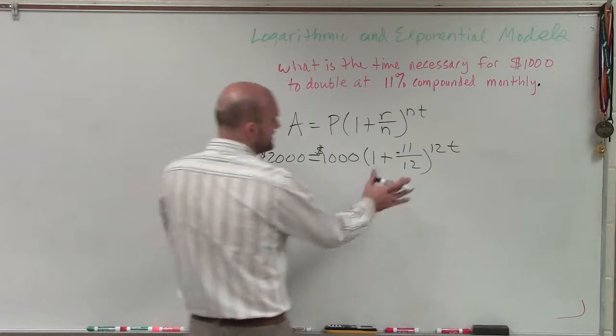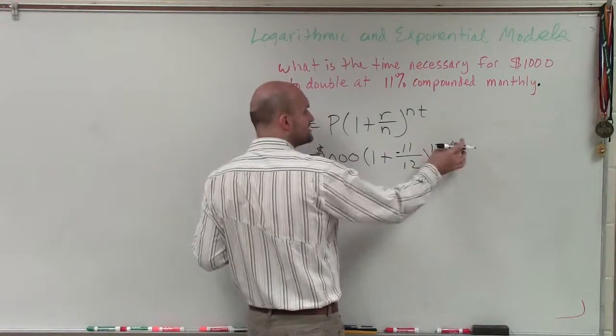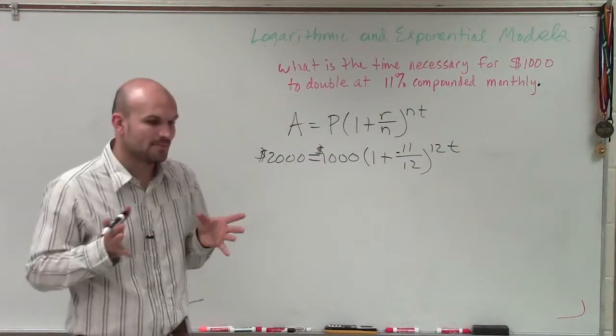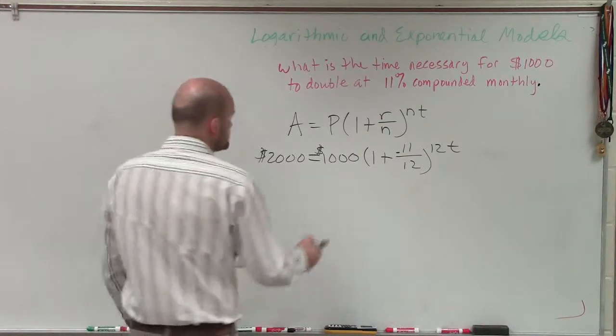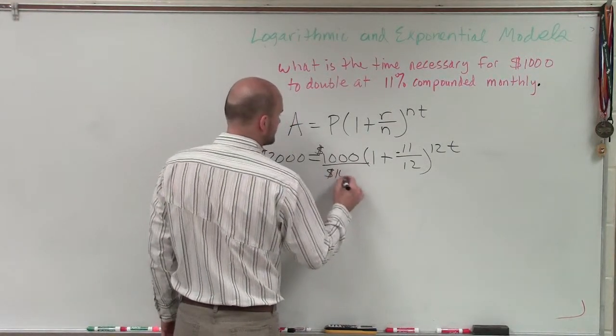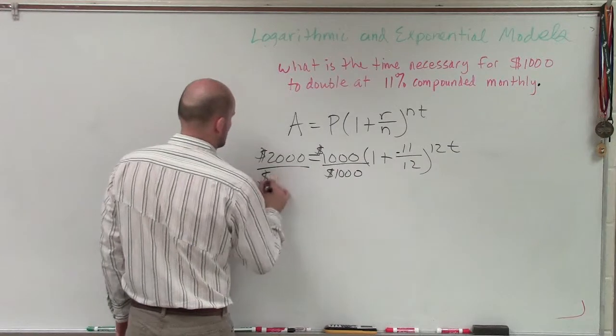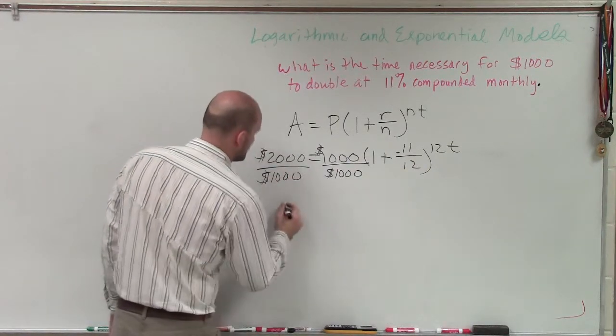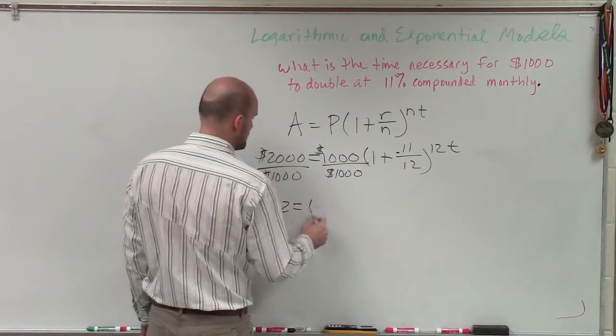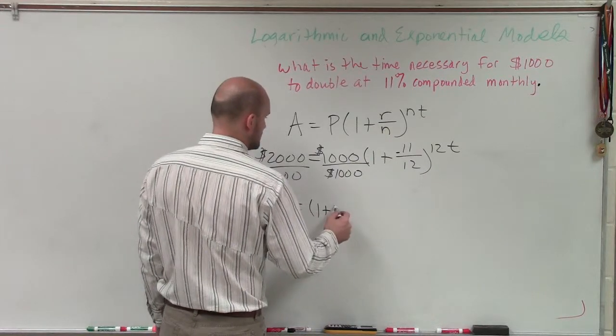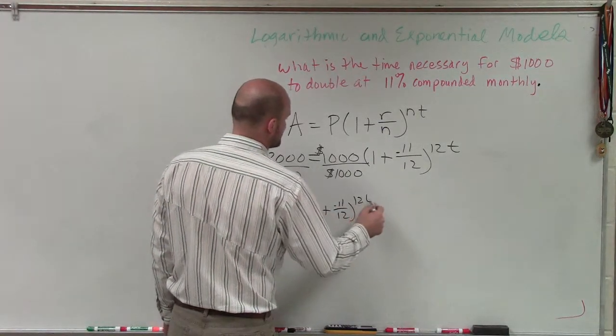So a couple of things we can do is we need to isolate this. We need to solve this so we can just get our exponent by itself. So to do that, I'm going to divide by $1,000. Therefore, I have 2 equals 1 plus 0.11 divided by 12 raised to the 12t.